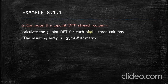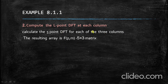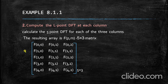The next step is to compute the L-point DFT at each column. In this example, L equals 5, so we calculate the 5-point DFT for each of the 3 columns since M equals 3. After finding the L-point DFT for each column, the obtained matrix is termed capital F, which is a 5-by-3 matrix. This is the resulting array after completing step 2.